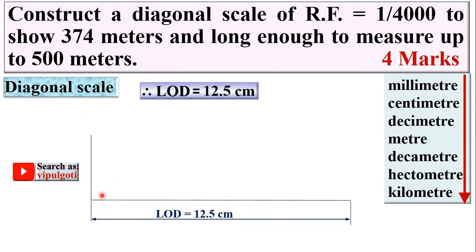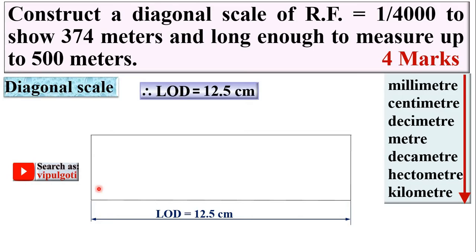Now take height as 2 centimeters because it is a diagonal scale. In case of a plane scale you take the height as 1 centimeter, whereas for a diagonal scale take the height as 2 centimeters, then complete the rectangle. Keep in mind that 2 centimeters is not fixed — you can take any height — but 2 centimeters is convenient to divide, so take 2 centimeters for convenience.